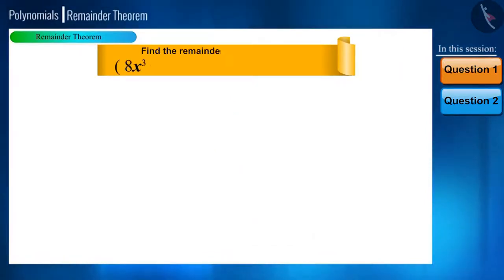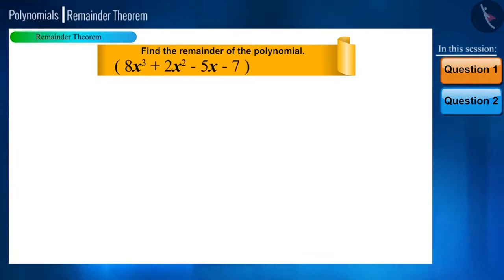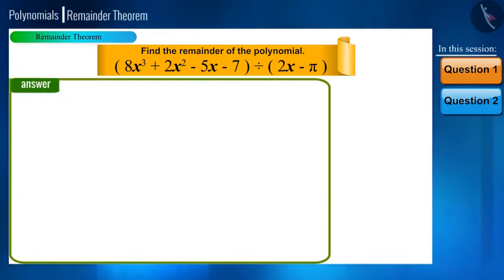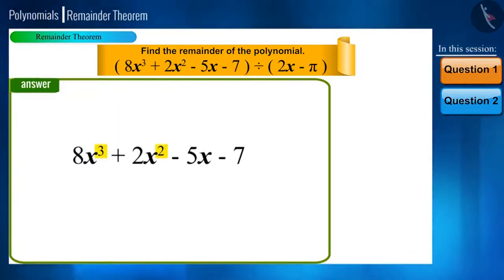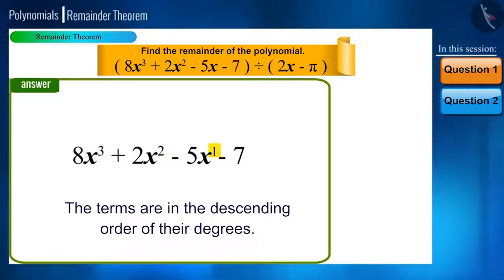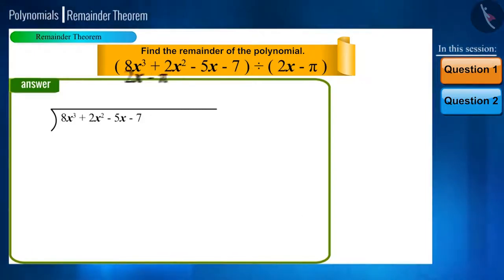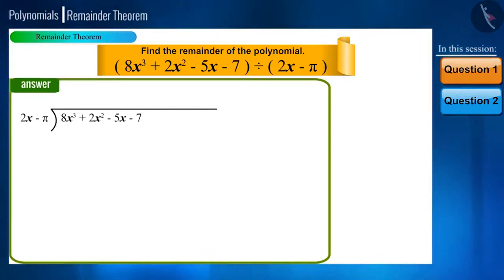Divide the polynomial 8x cubed plus 2x squared minus 5x minus 7 by the linear polynomial 2x minus pi to find the remainder. We have to first ensure that the given polynomial is arranged in descending order of its powers. This polynomial is in descending order. Now write it in the division format, being careful to take the linear polynomial as the divisor and the polynomial with higher powers as the dividend.